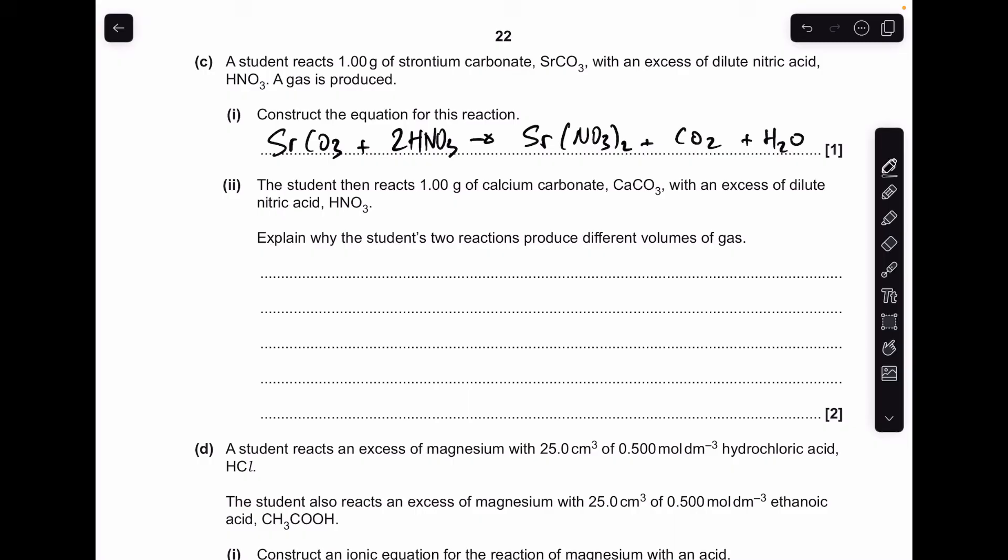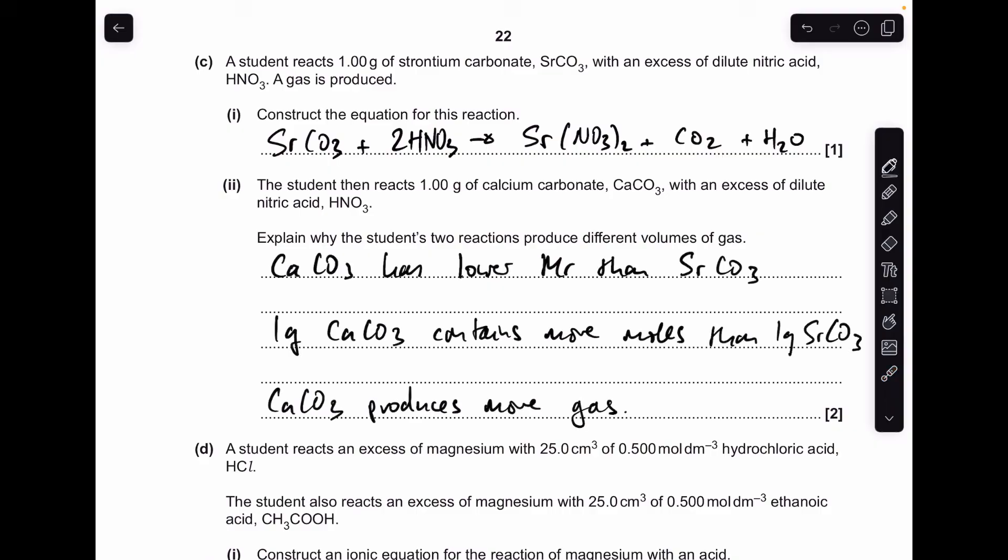Moving on to part C, the reaction of strontium carbonate with nitric acid looks like that. Moving on to the next part, the students reacted the same mass of a different carbonate of group 2, calcium carbonate, still with an excess of dilute nitric acid. Why does the student get different volumes of gas? Well it's all down to the MR of the carbonates and therefore the moles that are present. Calcium carbonate having a lower MR than strontium carbonate, so 1 gram of calcium carbonate contains more moles than 1 gram of strontium carbonate, so calcium carbonate is going to produce more gas.